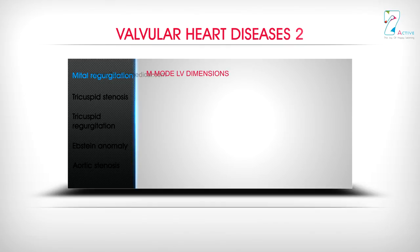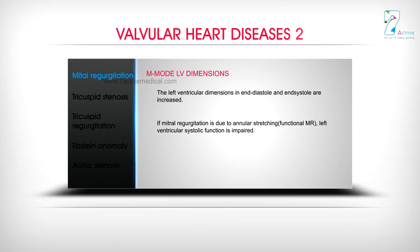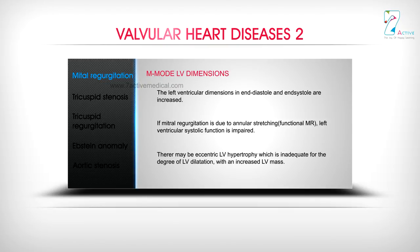M-Mode LV Dimensions: The left ventricle dimensions in end diastole and systole are increased. If mitral regurgitation is due to annular stretching — functional MR — left ventricle systolic function is impaired. There may be eccentric LV hypertrophy, which is inadequate for the degree of LV dilatation, with an increased LV mass.